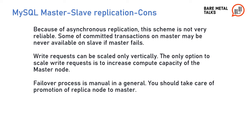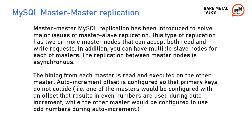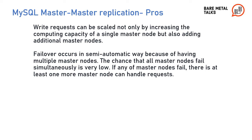Master-Master Replication has been introduced to solve the major issues of Master-Slave Replication. This type of replication has two or more master nodes that can accept both read and write requests. In addition, you can have multiple slave nodes for each master. Replication between master nodes is asynchronous — the binary log from each master is read and executed on the other master. Auto-increment offset is configured so that primary keys do not collide. A pro is that write requests can be scaled not only by increasing computing capacity of a single master node, but also by adding additional master nodes.